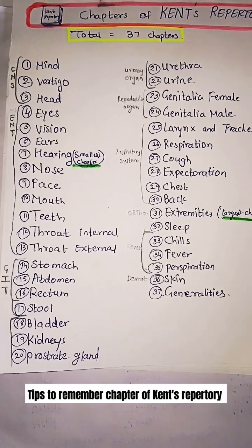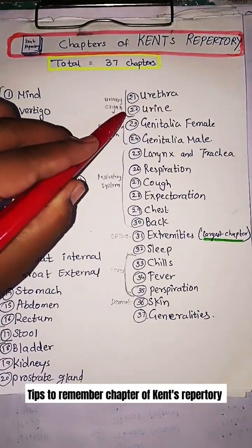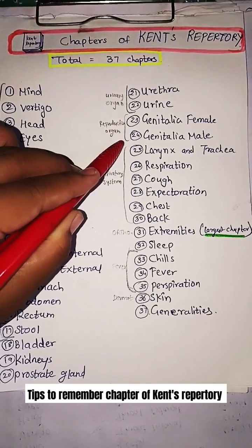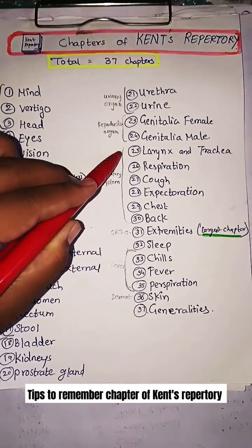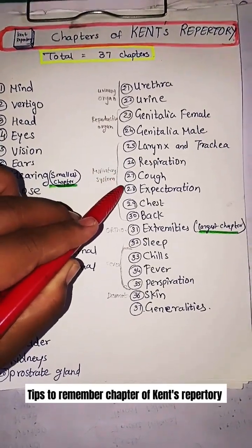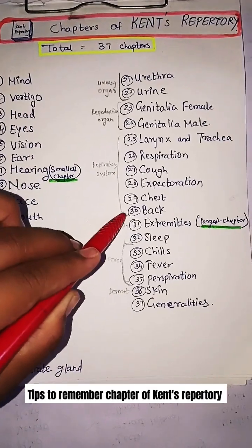Continuing: Kidney, Prostate Gland, Urethra, Urine, Genitalia Female, Genitalia Male, Larynx, Respiration, Cough, Expectoration, Chest, and Back.